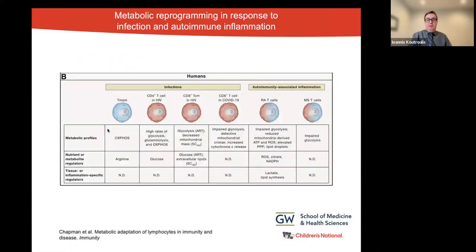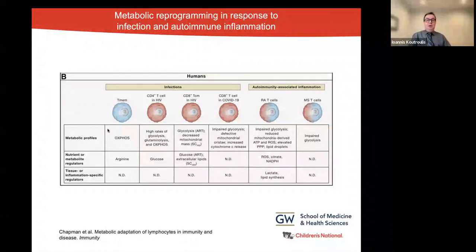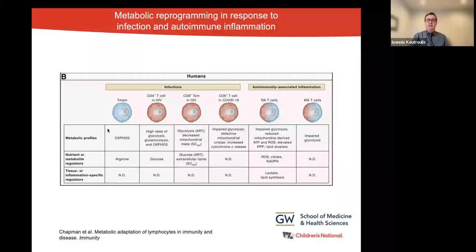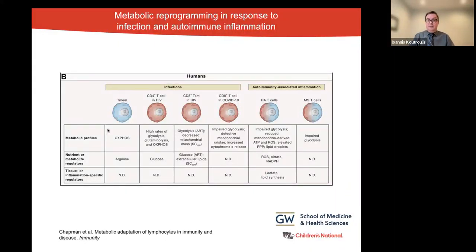We will now examine the role of immunometabolism in infection and autoimmune inflammation. Metabolic adaptation occurs in acute or chronic infection and autoimmunity-associated inflammation. Here you can see the metabolic profiles, nutrient or metabolic regulators, and tissue or inflammation-specific regulators that are responsible for metabolic reprogramming in human T cell populations. Blue cells display more catabolic metabolism, but red cells are more anabolic. In autoimmunity-associated inflammation, the blue-red gradient coloring represents cells that display a mixed anabolic and catabolic picture. Metabolic profiles of immune cells are distinct and can alter their function and role in immune response, autoimmunity, and pathophysiology of acute infection.